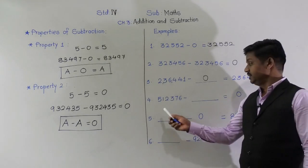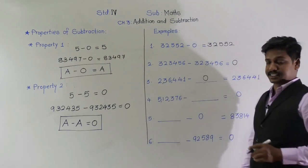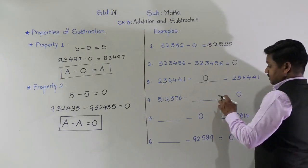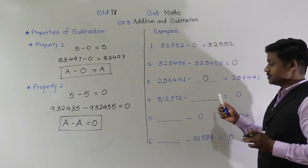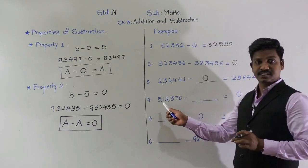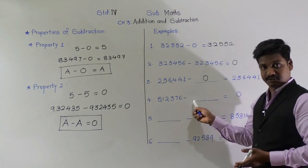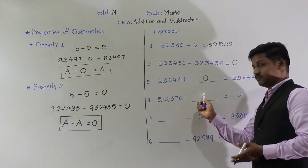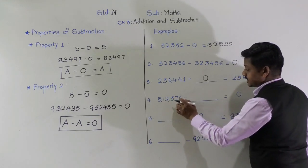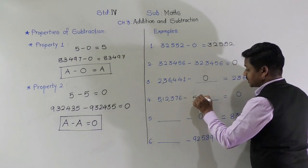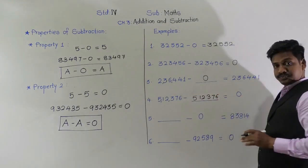Next example: 5,12,376 minus blank equals 0. The answer is 0, which means which number must have been subtracted? When we get the answer 0, that means the number itself was subtracted. So from 5,12,376, the same number 5,12,376 would have been subtracted to get answer 0.